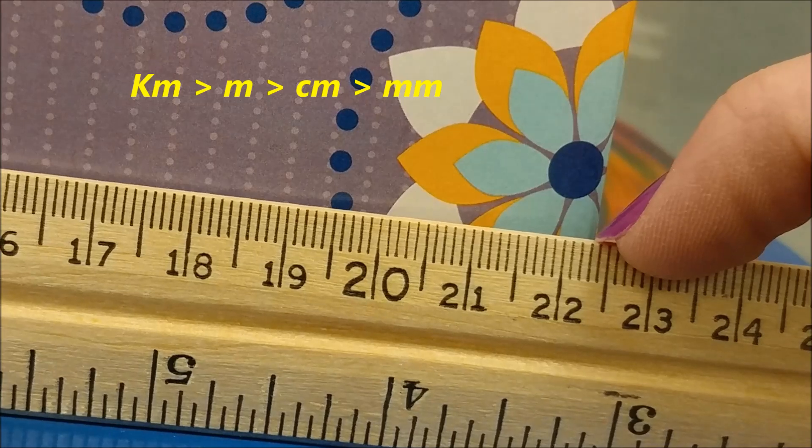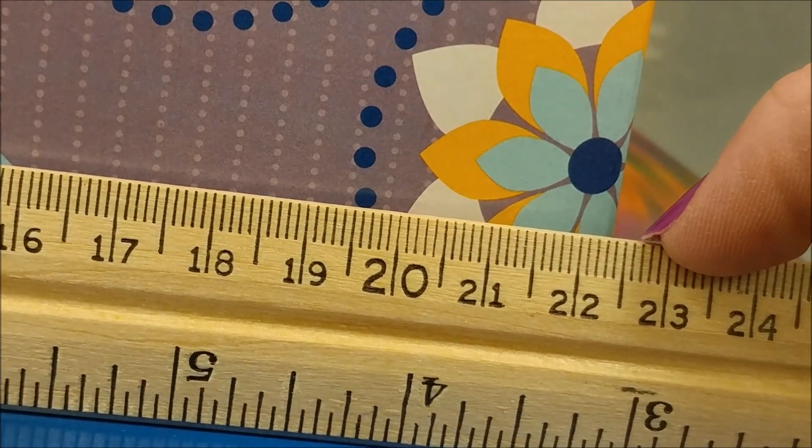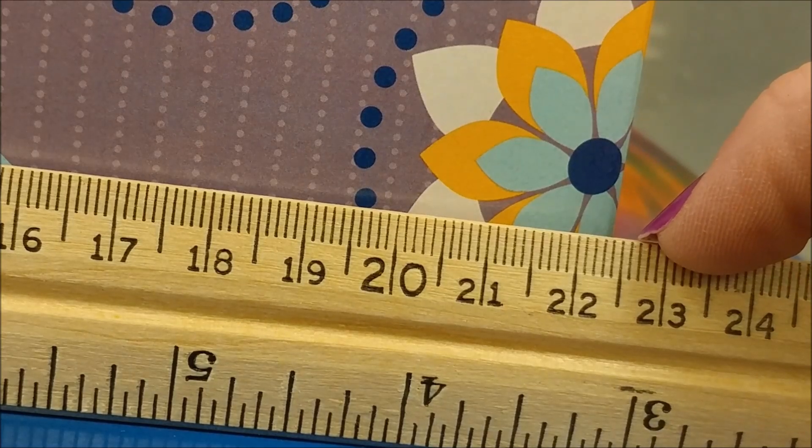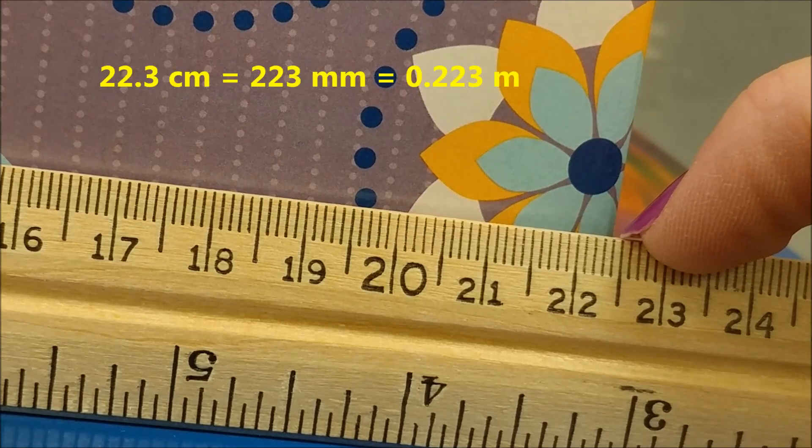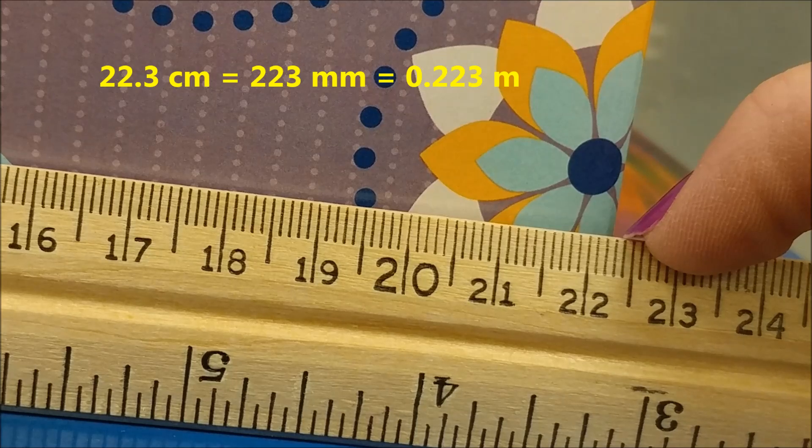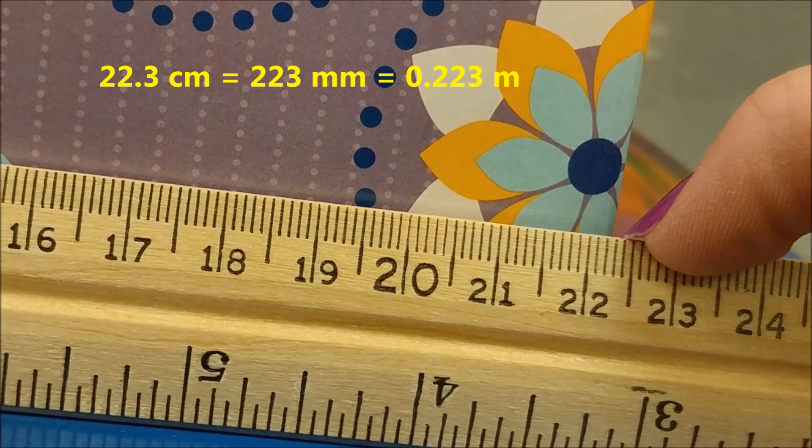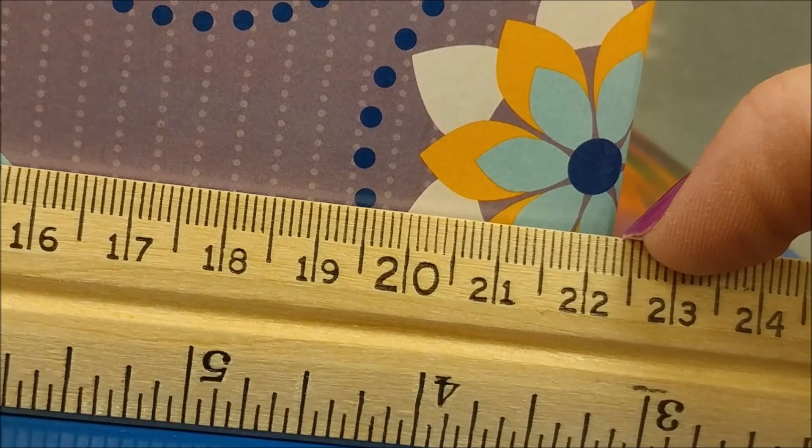We say centimeters and centimeters is the preferred unit for something like a tissue box because it sounds more accurate. 22.3 is the same as 223 millimeters, but 223 makes it sound like it's a lot larger than it is. So 22.3 just sounds more accurate, that's why it's preferred.